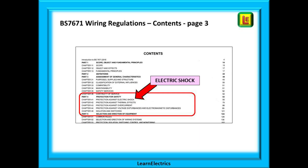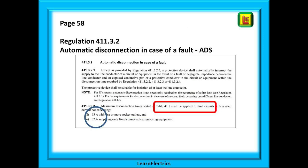If we recall from the previous video on using the contents pages, we will find on page 3 of the wiring regulations book the main contents page. Looking down the page, part 4 is all about protection for safety, and below this heading is chapter 41: protection against electric shock. This is where we will find information about ZS and disconnection times. Turning to chapter 41, we find regulation 411.3.2, titled automatic disconnection in case of a fault — shortened to ADS, automatic disconnection of supply. In other words, if a fault occurs the fuse or breaker will automatically disconnect the supply and make the circuit safe.